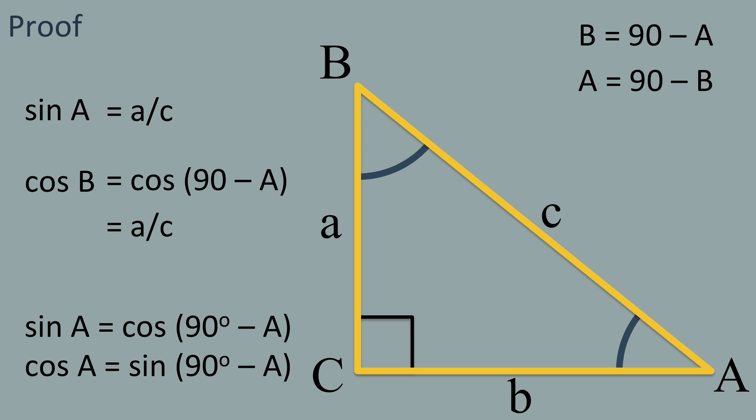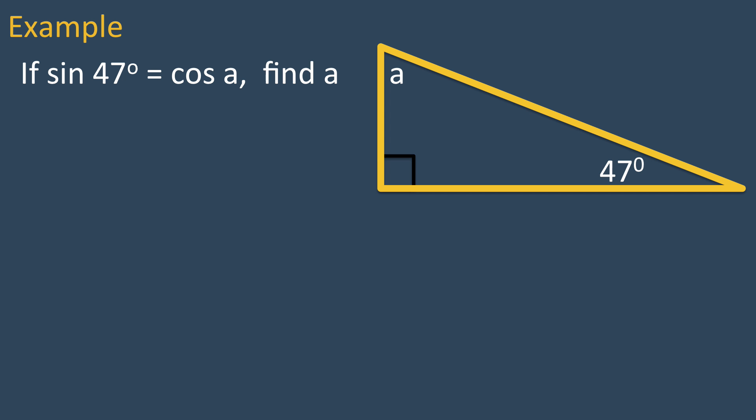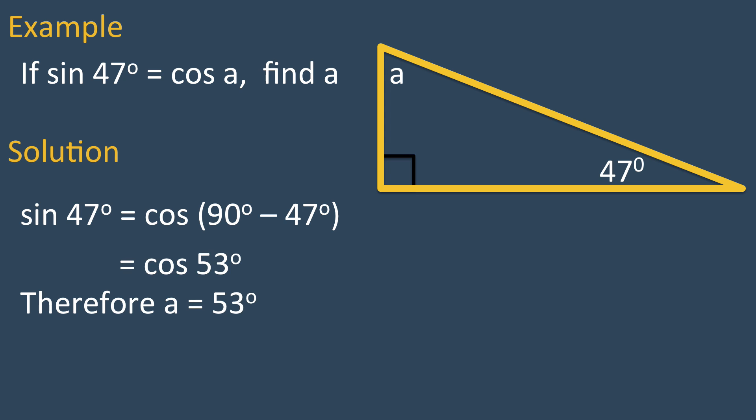Also, cosine a equals sine of 90 minus a. Here's an example: if sine of 47 degrees equals cos a, find the value of a. Sine of 47 degrees equals cos of 90 degrees minus 47 degrees, which is cosine of 53 degrees. Therefore, a equals 53 degrees.